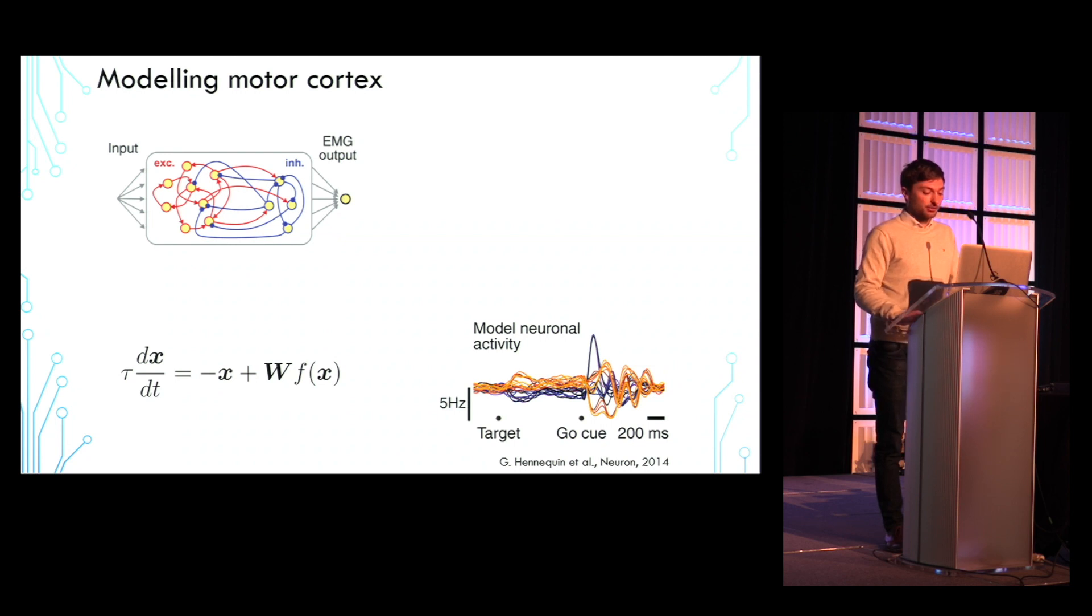A possible mechanism for effectively switching the network activity to produce a large variety of outputs is to adjust the intrinsic gain, that is, the input-output sensitivity of each neuron through the gain function F.